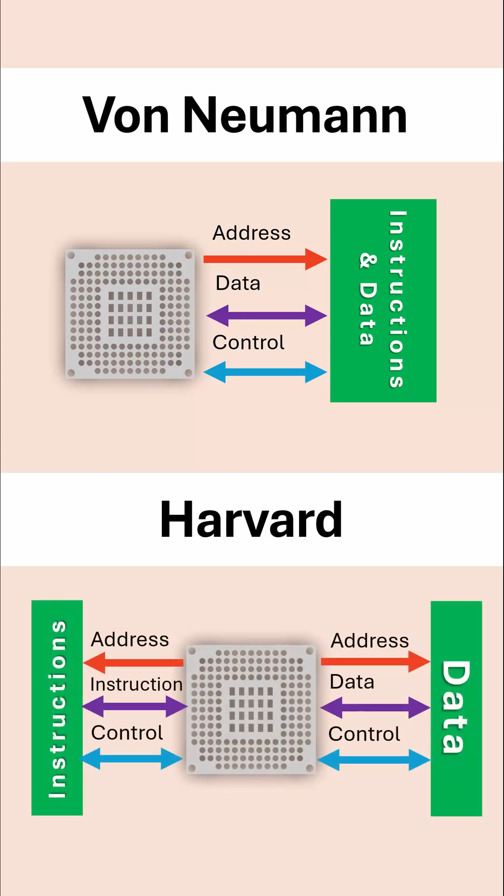The Harvard approach has two separate memory units—one for just instructions and one for just data. We can see two sets of buses in Harvard compared to one set of buses in von Neumann.